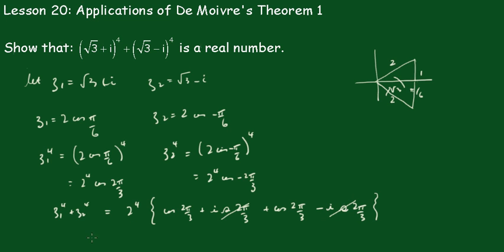And you get that 2⁴ is 16 times, and the cos of, that's 2cos(2π/3). The cos of 2π/3 is -1/2, so that becomes -16, which is a real number.